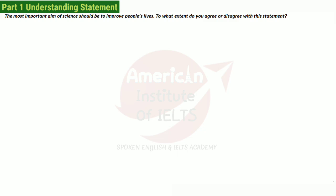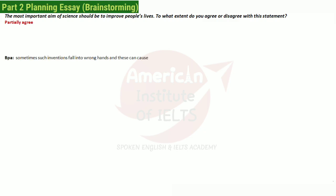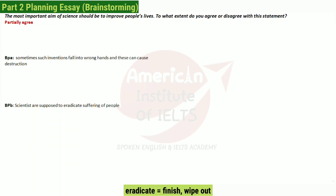I think science definitely should improve lives, but it doesn't always happen that way — it is misused and when it falls into bad hands, there can be destruction and harm. So I'm taking a neutral approach. In body paragraph 1 I'll write that sometimes such inventions fall into wrong hands and can cause destruction, and in body paragraph 2 I'll write that science helps eradicate the sufferings of people.